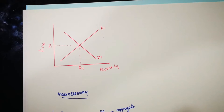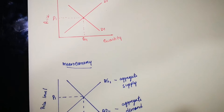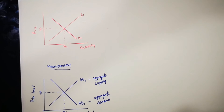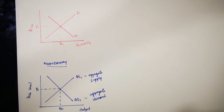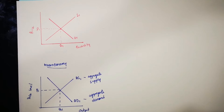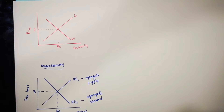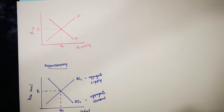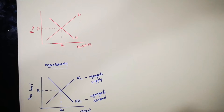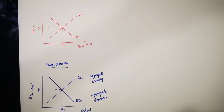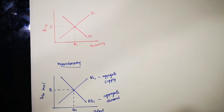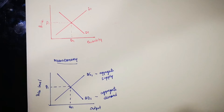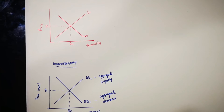Now let's take a moment and compare both diagrams. They are pretty much the same — the only differences are in labeling. Instead of S and D it is AS and AD in the macroeconomic diagram, and instead of price it is price level, and instead of quantity it is output. So these are the subtle differences.